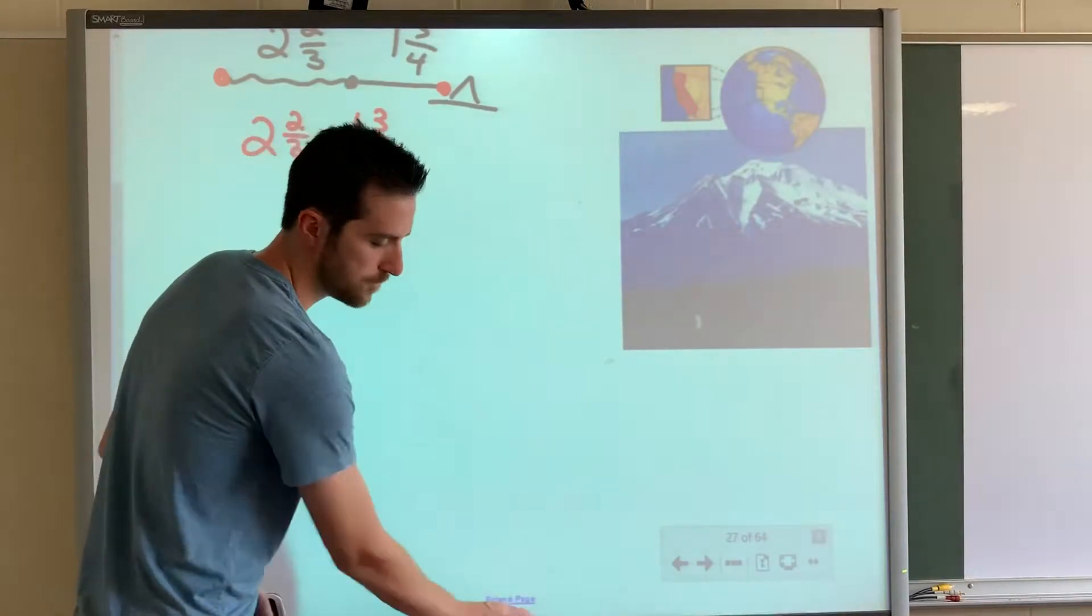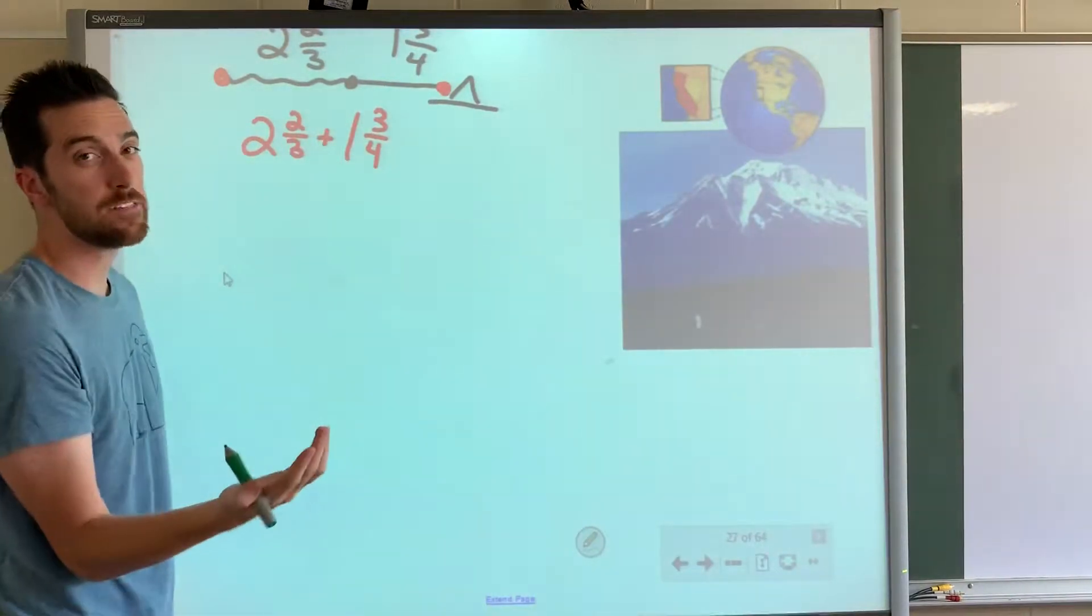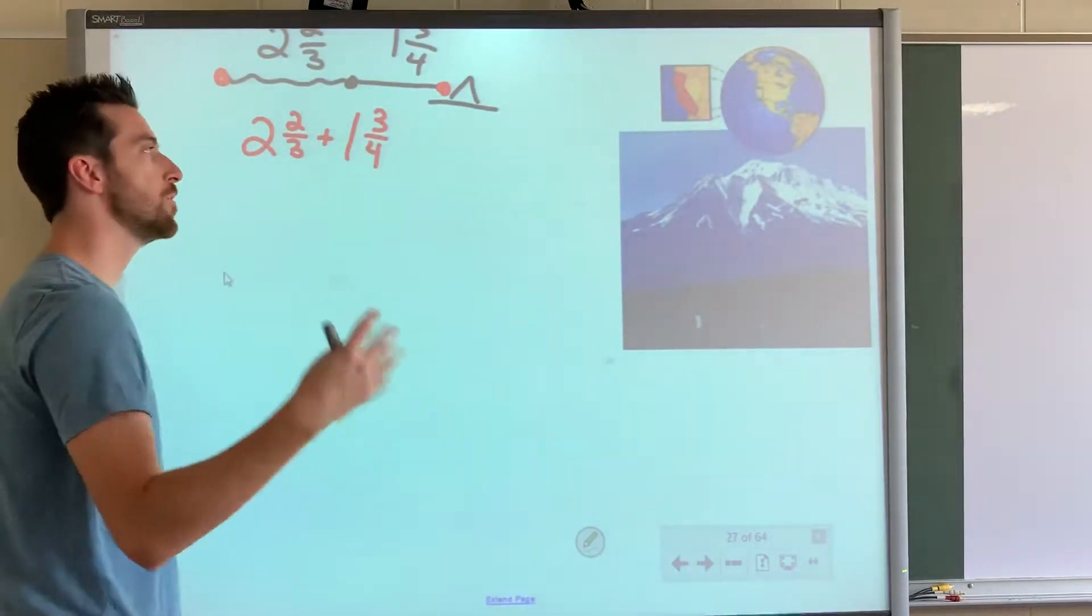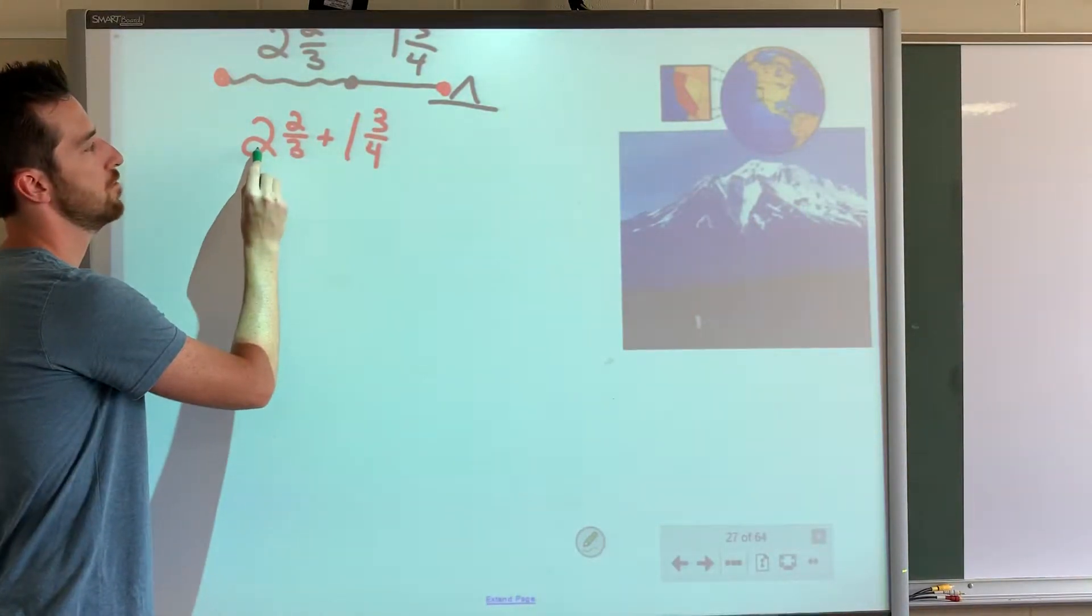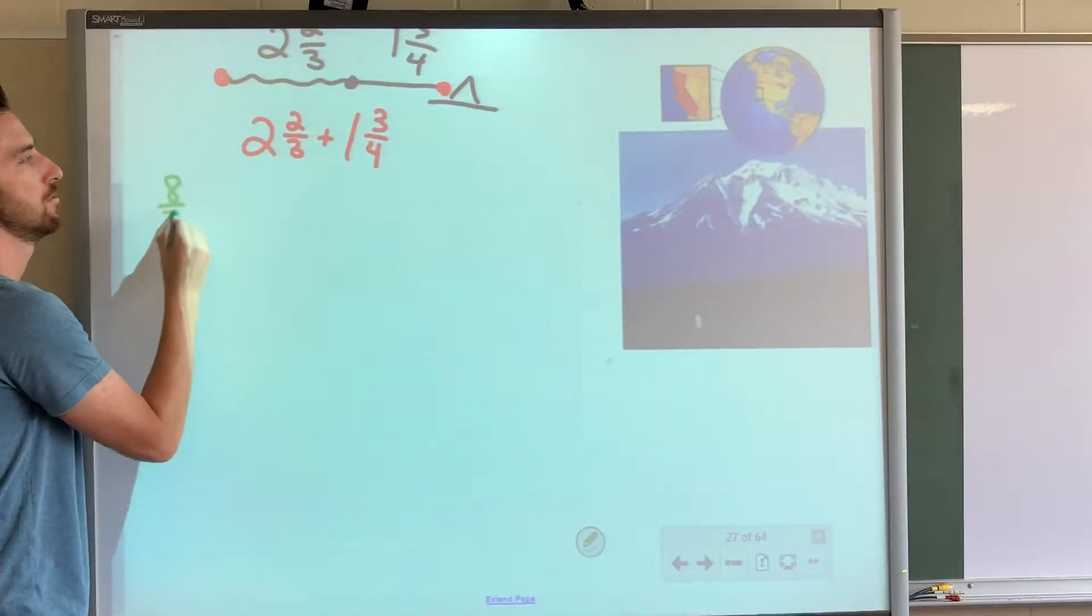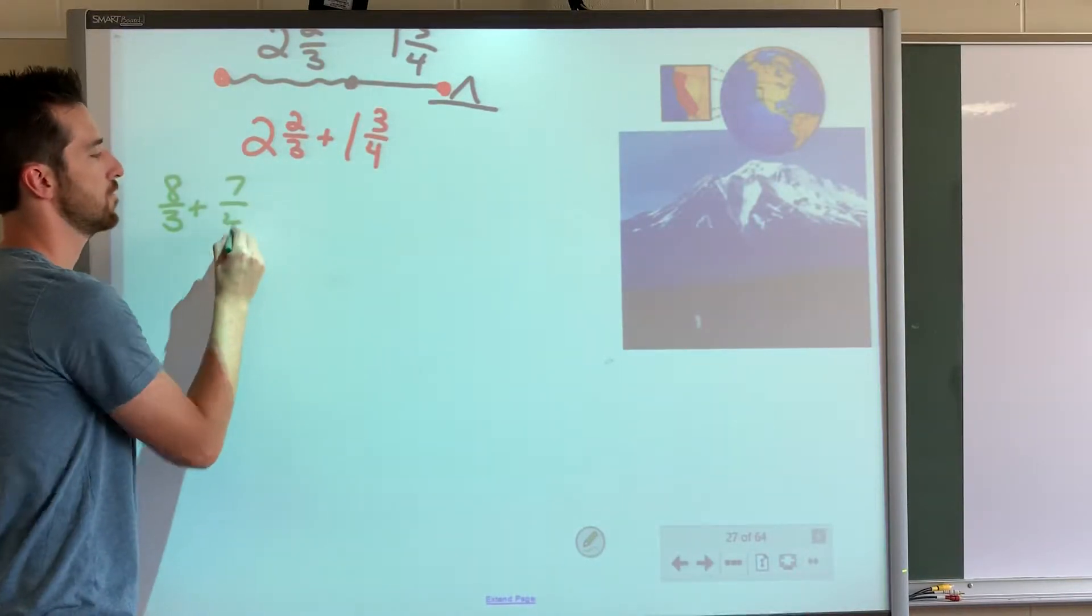Again, I'll show you a couple ways. Pick the way you want. So what you can do, you can keep them as mixed numbers if you'd like, which we'll do that the second time. Or you can go improper fractions. So three times two is six plus two is eight. Eight-thirds. Four times one is four plus three is seven. Seven-fourths.